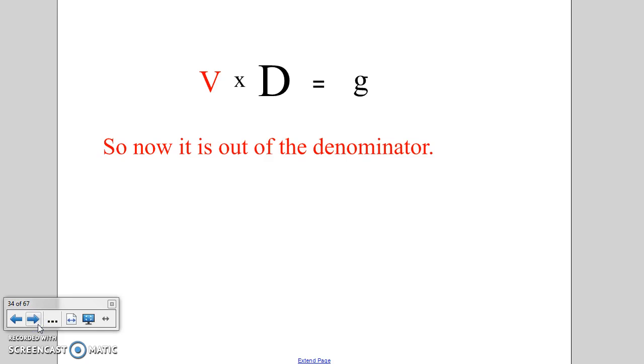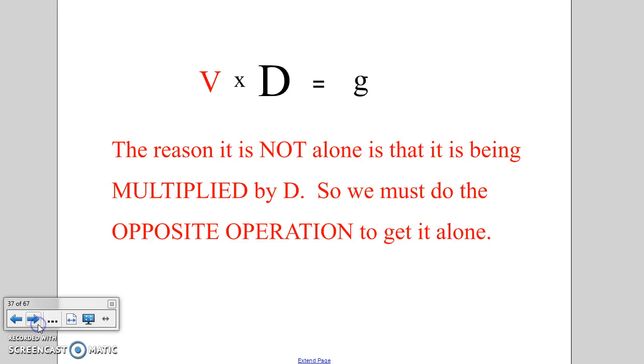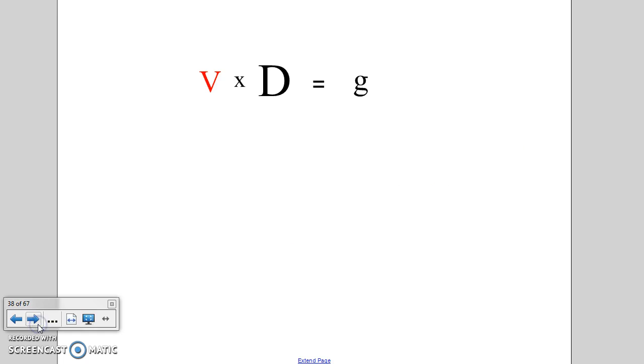The formula reduces to V times D equals g. So now that is our formula. It's out of the denominator, but it's not alone yet - the V that we're looking for is not alone, it's being multiplied by D. So we must do the opposite operation to get the V by itself. Right now it's times D. What's the opposite operation of times D? Well, of course, it's divide by D.